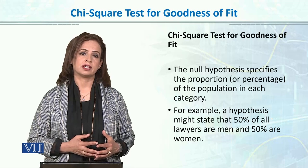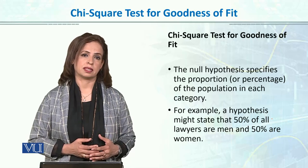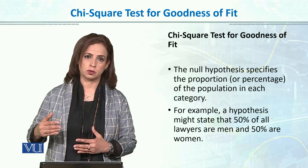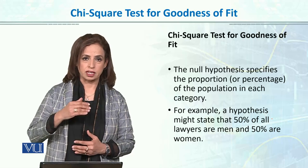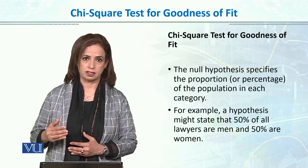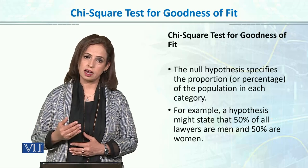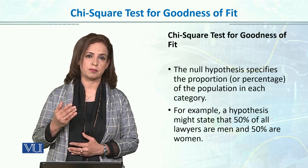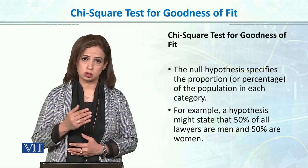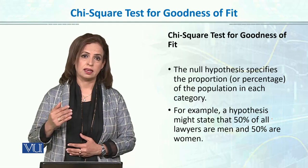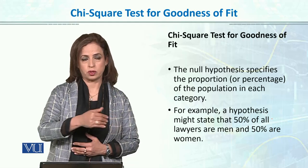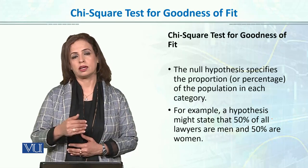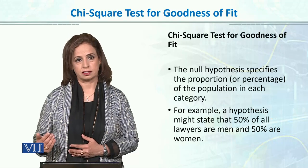The 'no preference' hypothesis means that there will be equal frequencies for each category. Just as in T and Z tests the null hypothesis states there is no difference, here in chi-square we state that the frequencies will be equal in all categories.